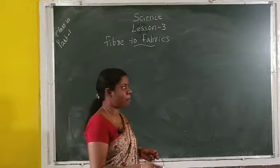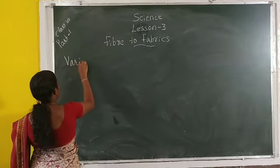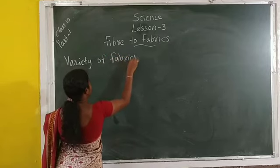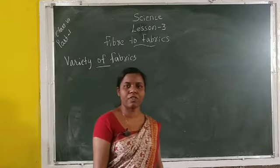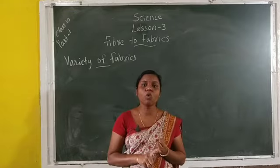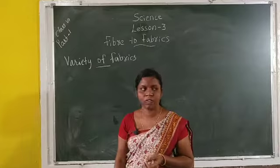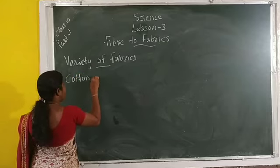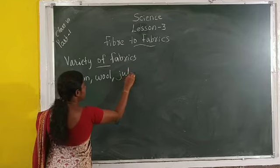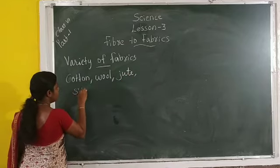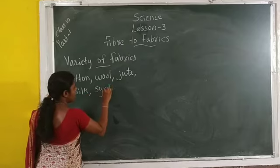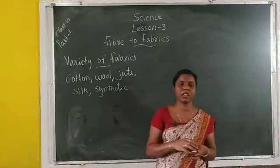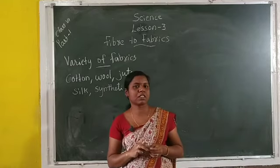Next, we discuss the variety of fabrics. We use different kinds of fabrics — cotton, wool, silk, and synthetic. What are the different types of fabrics? Cotton, wool, jute, silk, and synthetic — these are the different kinds of fabrics or cloths.